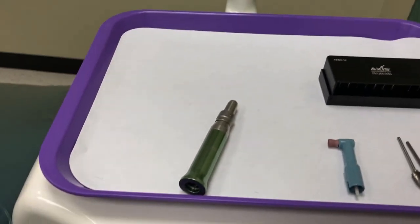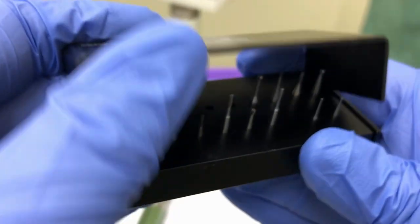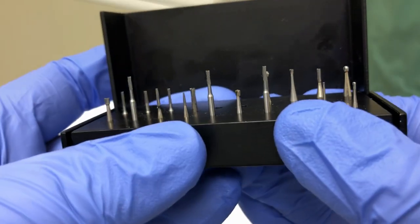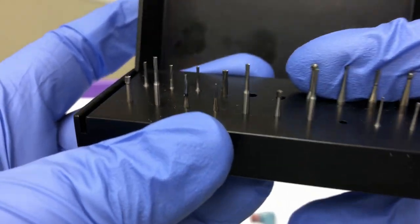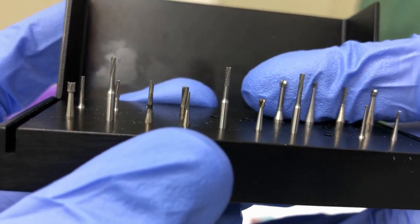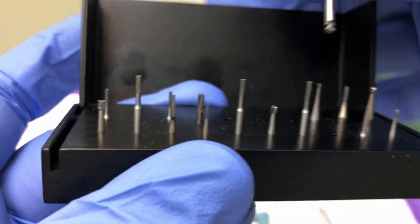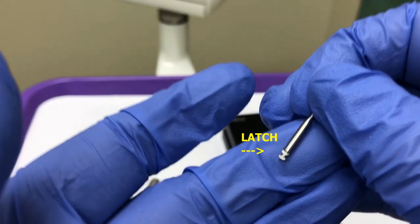For this example, we're going to select a number four burr, which is a round burr. Make sure you select a right angle or latch style attachment. You must have a latch style attachment to fit into the contra angle. The high-speed handpiece used a friction grip burr.